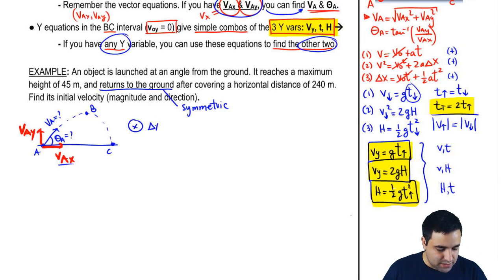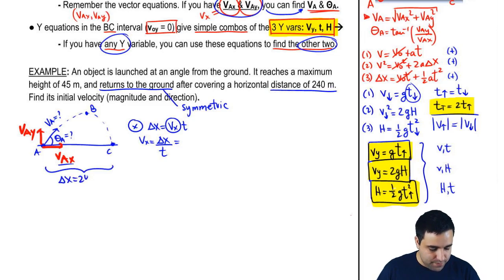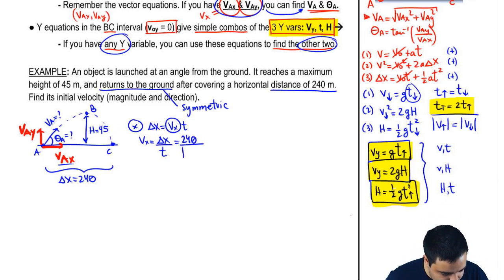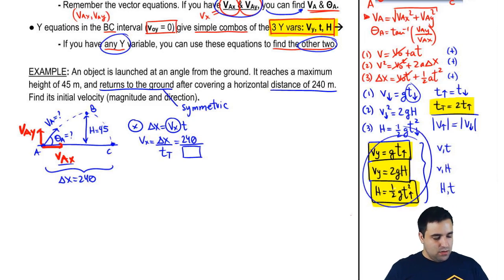So there's only one equation, delta X equals VX T. So VX is simply delta X over T. I have delta X. This problem says that you go a horizontal distance of 240. And by the way, it also says that the height is 45. So I have 240 divided by time. The time I don't have. But I do want to point out since I'm using 240, which is the entire width of the motion, it's the entire horizontal displacement of the motion, I have to use T total. And these equations are only going to give me half of that time. So remember that T total is twice the time to go up.